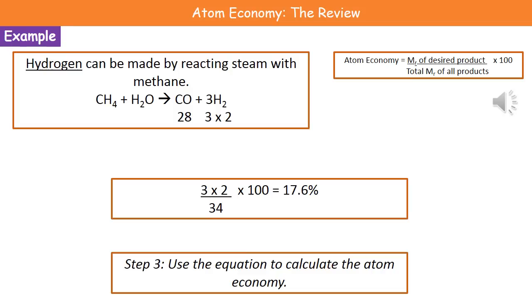The last stage is to use the atom economy calculation. The molecular mass of our desired product, hydrogen, is 6 (which is 3 × 2). We divide that by the total molecular masses of all products: 28 + 6 = 34. Our final calculation is 6 ÷ 34 × 100 = 17.6%.